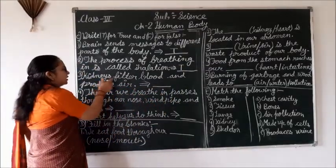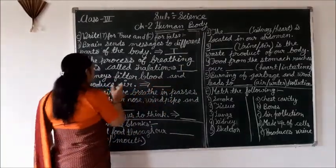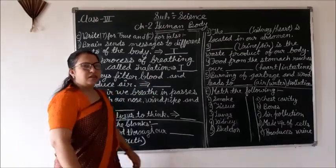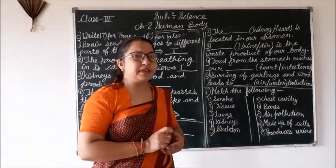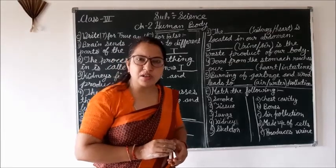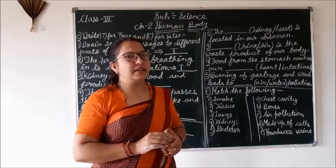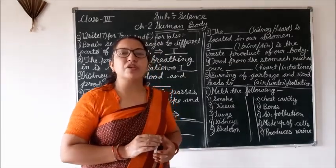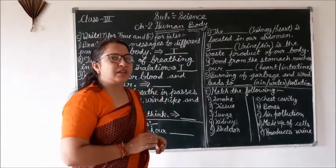Third: kidneys filter blood and produce air. Kidney blood filter karti hai, yeh hume pata hai. But it produces urine, not air. Urine.